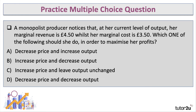Here's a practice multiple choice question: a monopolist notices that at her current level of output, her marginal revenue is £4.50 whilst her marginal cost is £3.50. Which one of the following should she do in order to maximize her profits? Press pause and have a go. In this situation, the revenue of the next unit is higher than the cost of the next unit, so the monopolist should go ahead with that extra unit — and to do that they'd have to lower the price. The answer is: decrease the price and increase the output.